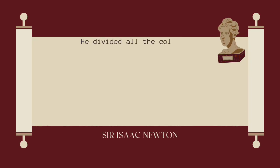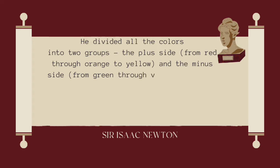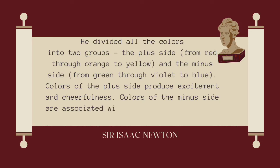He divided all the colors into two groups: colors of the plus side, from red through orange to yellow, and the minus side, from green through violet to blue. Colors of the plus side produce excitement and cheerfulness. Colors of the minus side are associated with weakness and unsettled feelings.